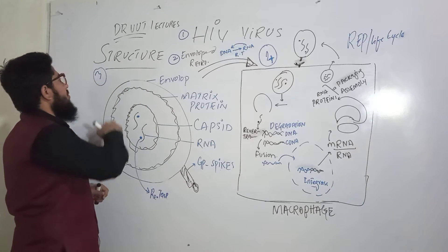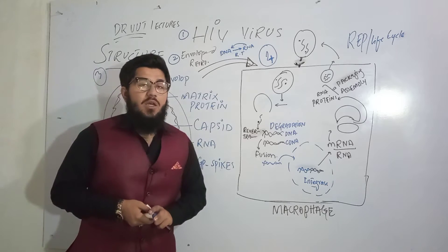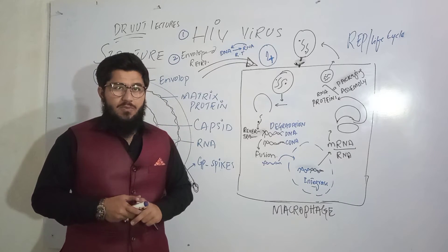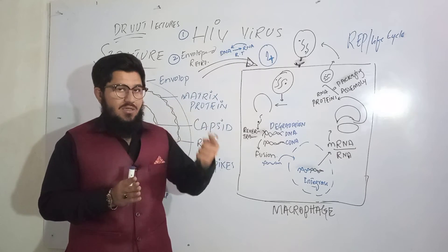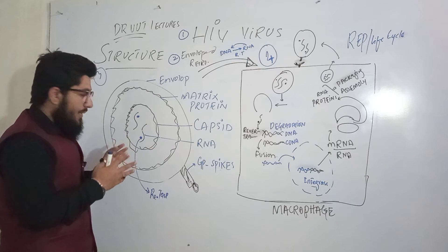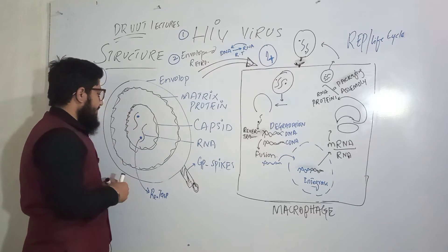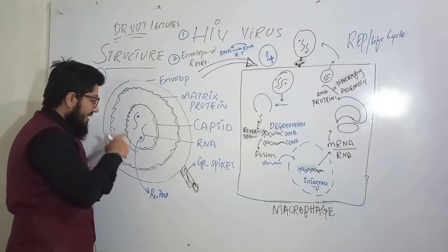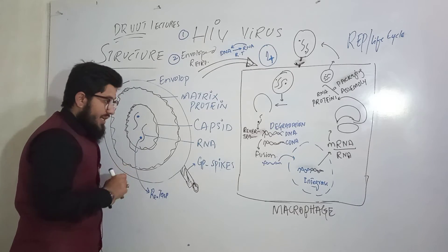Now let's come to the third point — the structure of the human immunodeficiency virus. I will explain the structure from the core to the external surface. In the core, in the internal region, there are two single-stranded RNA molecules. Along with that, there is an enzyme — reverse transcriptase.